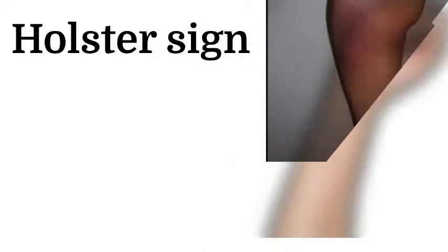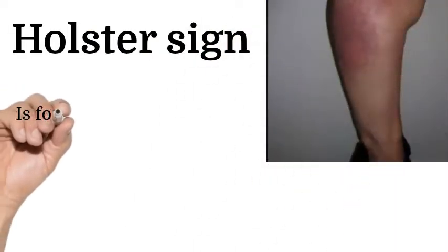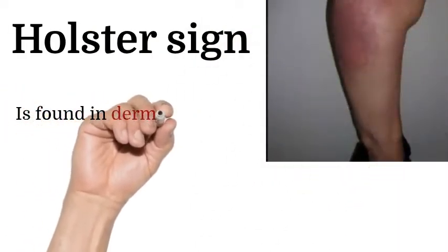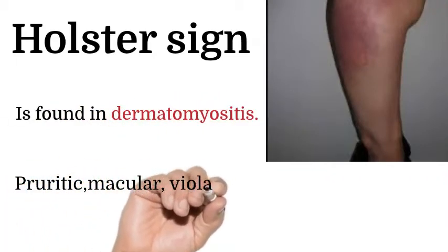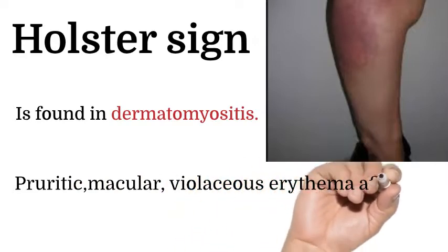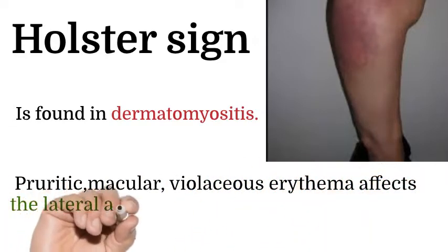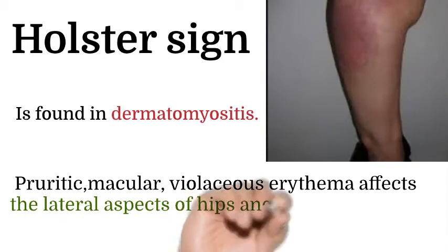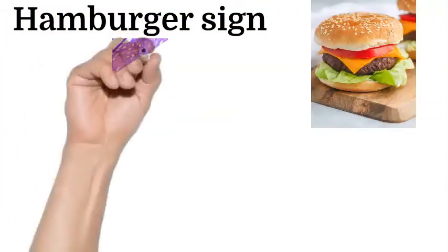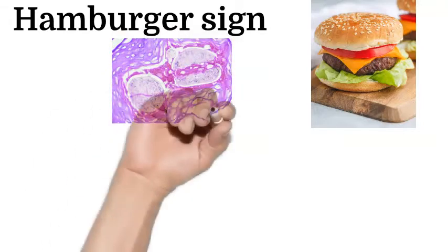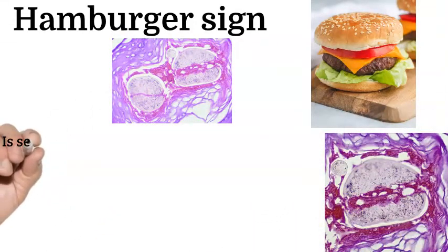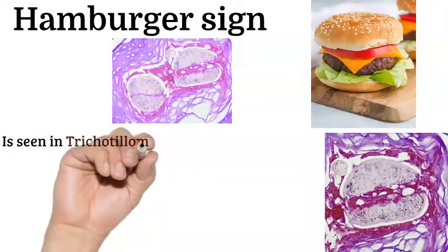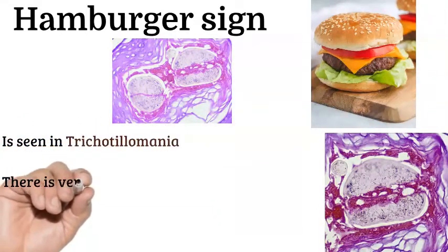Holster sign: this sign is seen in dermatomyositis, where there is pruritic macular violaceous erythema affecting the lateral aspects of the hips and thighs.